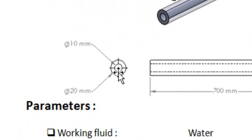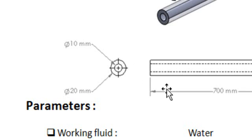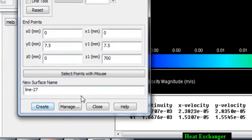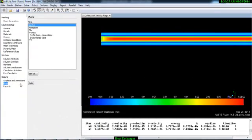The inner tube has a diameter of 10 millimeter and the outer tube diameter is 20 millimeter. To create a line in the cold fluid zone at the outer tube, the Y value must be greater than 5 millimeter, since the radius of the inner tube is 5 millimeter. We will place the line at the midpoint, so Y equals 7.5 millimeter. Change the Y value to 7.5 for both points, name it Line 2, and click Create.